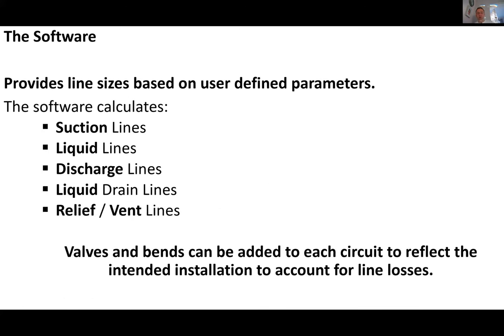So what does MicroPipe do? It provides line sizes in a distributed system based on user parameters. The software can calculate suction lines, liquid lines, discharge lines, liquid drain lines, and relief vent lines. What's great is each individual circuit — each individual pipe in the system — can have bends and valves. The system will calculate based upon real life losses from transitioning between pipe, valves, and different materials such as copper to brass, and the impact of losses around single or multiple bends.